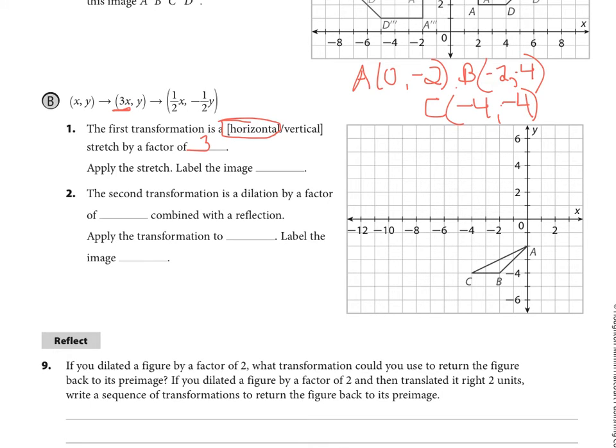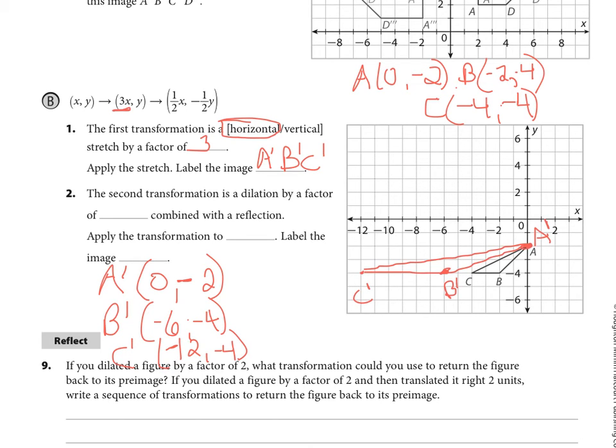So I have my original coordinates written in red. And now I'm going to apply the stretch. And we're going to label it primes. A triangle, A prime, B prime, C prime. So my A prime would be 0, negative 2. B prime would be negative 6, negative 4. And C prime would be negative 12, negative 4. So I'm going to draw this triangle. I'm going to pause it while I draw the triangle. There's my triangle with the first transformation, the stretch factor of 3 applied to it. My triangles are getting better, by the way. I hope everybody noticed.